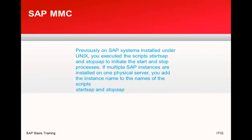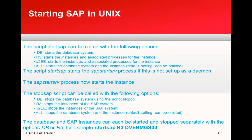On Unix, you use the stopsap and startsap scripts for stopping and starting SAP. Parameters such as startsap db and startsap r3 or g2e can be used, and with these parameters you can also do individual system stop and start.